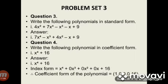Question 3: Write the following polynomials in standard form. Subdivision 1: 4x squared plus 7x raised to 4 minus x cubed minus x plus 9. Solution: Arranging the polynomial in descending powers of x, we get 7x raised to 4 minus x cubed plus 4x squared minus x plus 9.